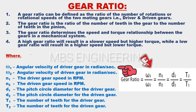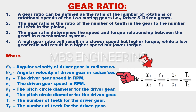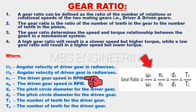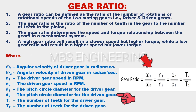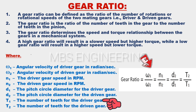Omega 1 is the angular velocity of the driver gear in radians per second. Omega 2 is the angular velocity of the driven gear in radians per second. N1 is the driver gear speed in RPM. N2 is the driven gear speed in RPM. D1 is the pitch circle diameter for the driver gear. D2 is the pitch circle diameter for the driven gear. T1 is the number of teeth for the driver gear. T2 is the number of teeth for the driven gear.